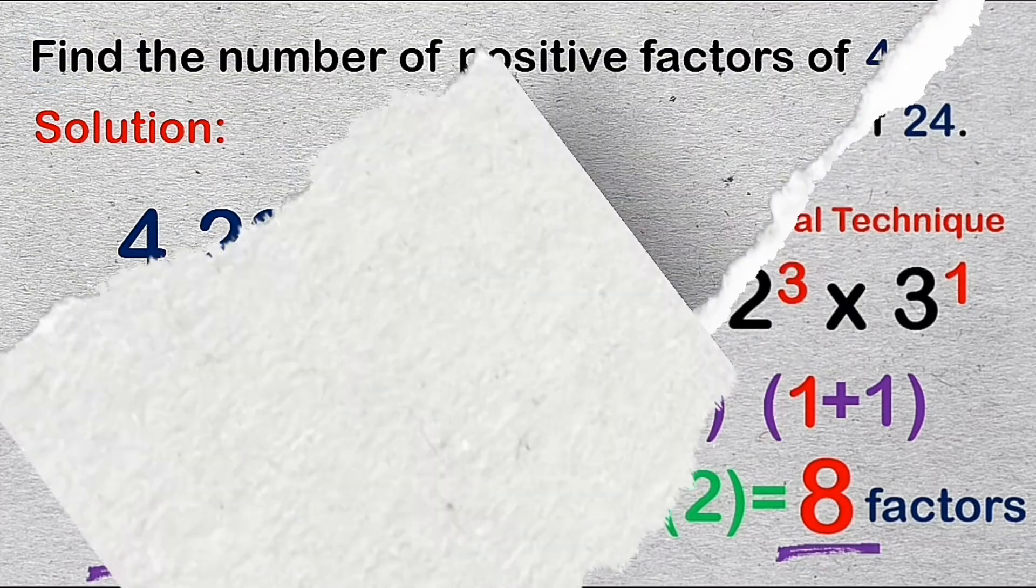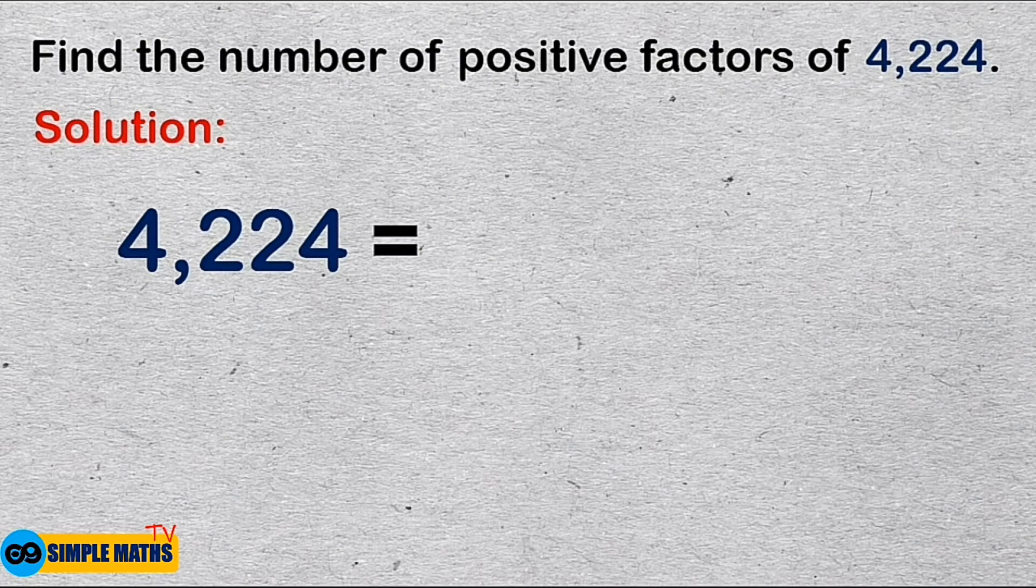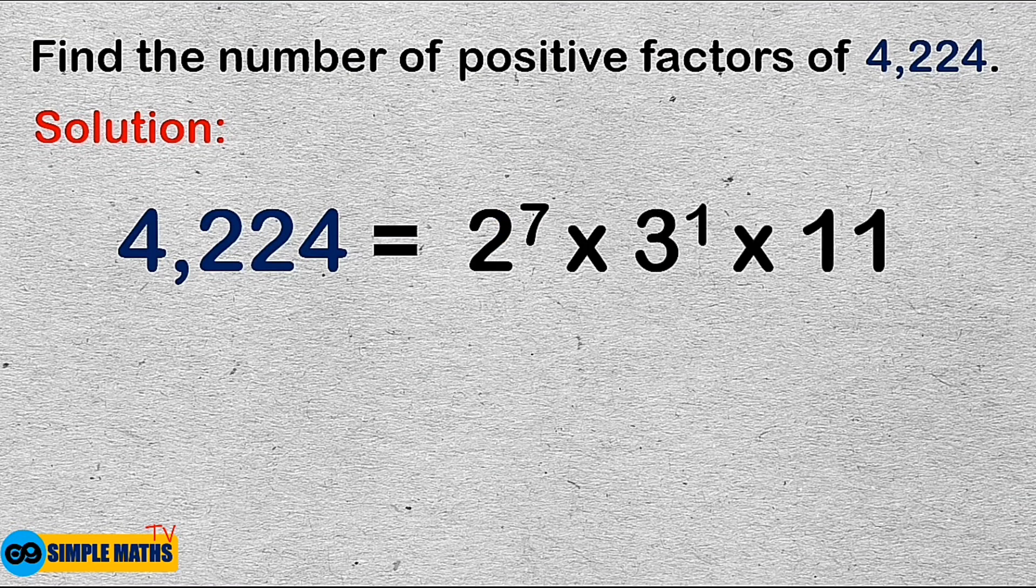Let's use this technique in finding the total number of positive factors of 4,224. First, we write the prime factorization. That's 2 raised to the 7th power times 3 times 11.